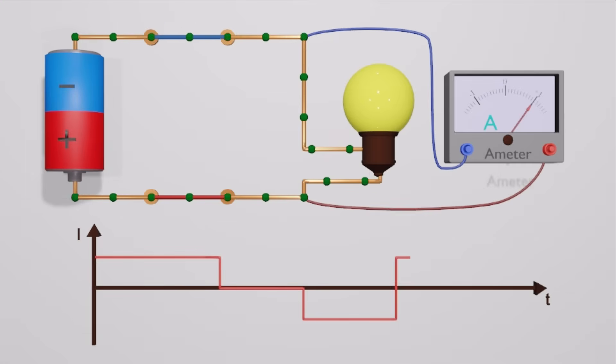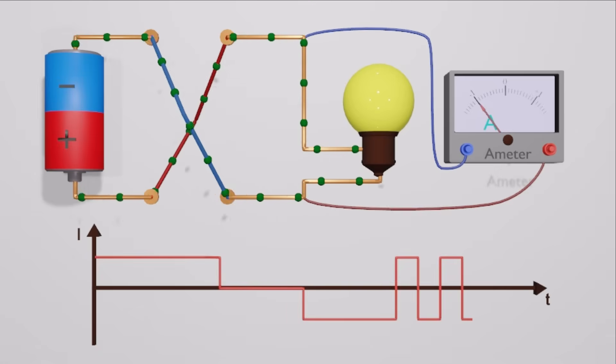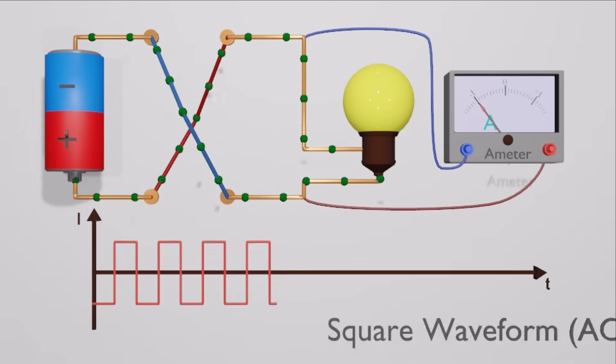Likewise we can change the wires back and forth so the current direction keeps reversing. What you end up with is very abrupt changes of current, all in one direction, all in the other direction, and back again. Look at the graph of the current against time, you'll get a square wave.